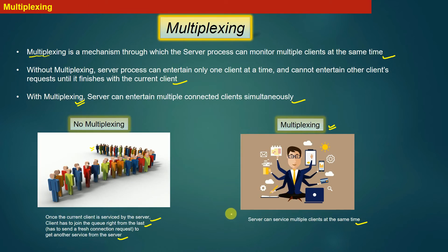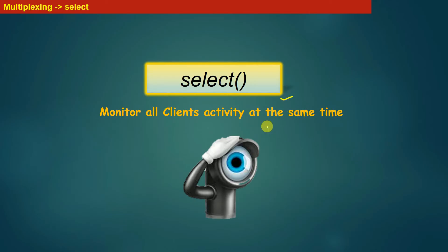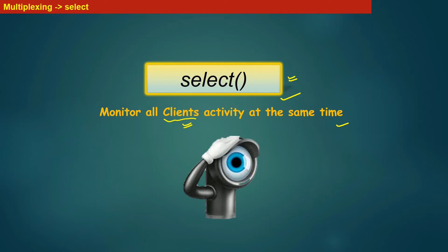Linux provides a special system call which enables the developer to implement multiplexing-based communication, and that system call is the select system call. The select system call helps us to monitor all clients' activity at the same time — which client has sent data, which client has not sent data, and which client has sent a new connection initiation request. Using this system call, our server can monitor the state of all connected clients at the same time.